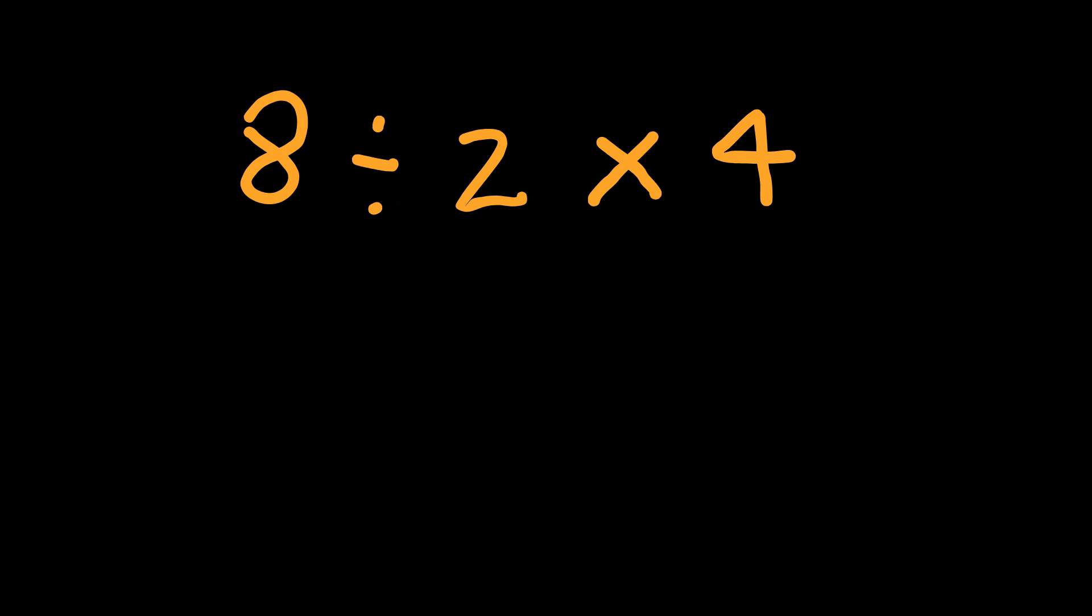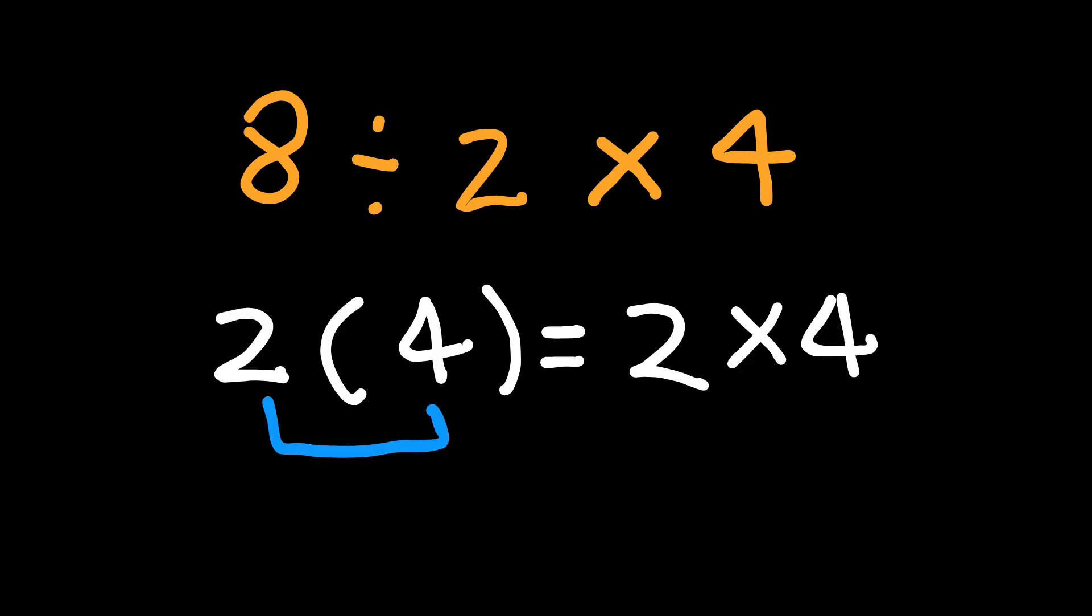And here's where the arguments explode online. So, how do we settle this? Let's go back to the rules after evaluating the parenthesis. We're left with 8 divided by 2 times 4. There's no parenthesis directly affecting 2 times 4. That 2 times 4 looks like a group. But mathematically, that 2 and that 4 just means 2 times 4. In PEMDAS, M and D are equal. So, you go left to right.